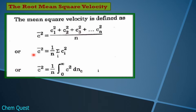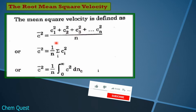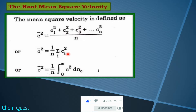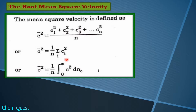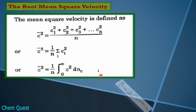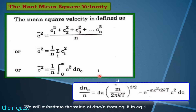Mean square velocity, c̄², is equal to (1/N) times the summation of the square of all velocities. More correctly, since we are including all velocities ranging from zero to infinity, we can take an integration sign. So mean square velocity becomes (1/N) times the integral from zero to infinity of c² dnc. We will represent this as equation number 1.